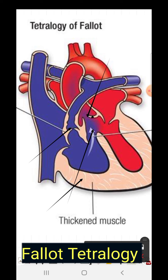Due to right ventricular hypertrophy, there are ECG changes including right axis deviation and right ventricular hypertrophy pattern. X-ray will show oligemic lung fields and a boot-shaped heart due to right ventricular hypertrophy. Sometimes a right aortic arch may also be seen.